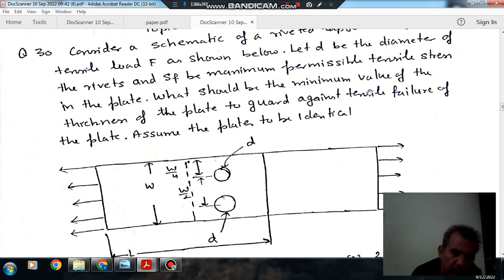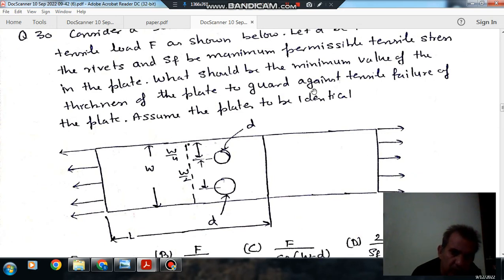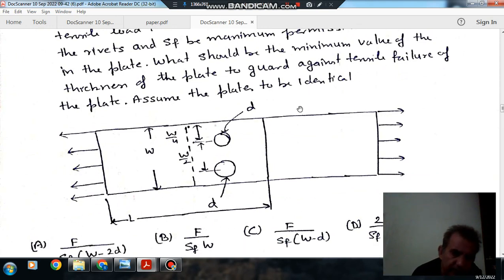What should be the minimum value of thickness of the plate to guard against tensile failure of the plate? Assume the plates to be identical.